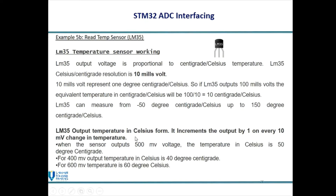The LM35 outputs temperature in Celsius. It produces 1 degree per every 10mV change in output voltage. This means when the sensor output is 500mV, the temperature is 50°C. And for 400mV output, the temperature is 40°C, and so on.